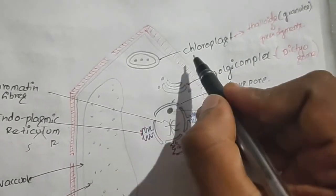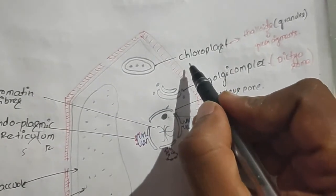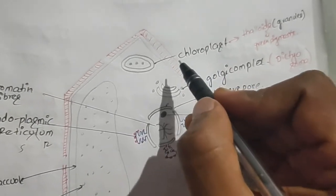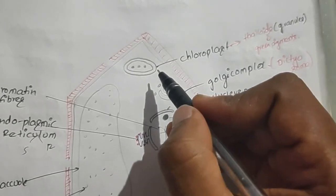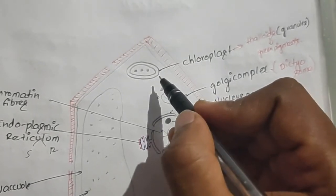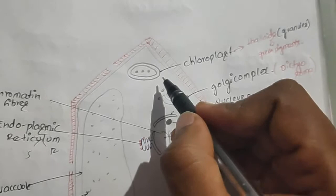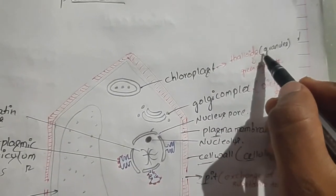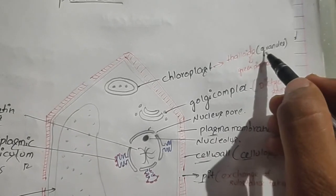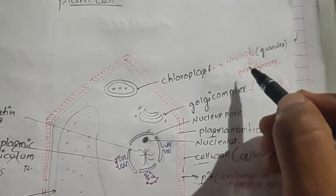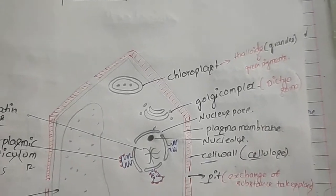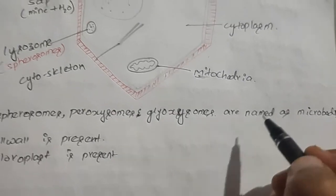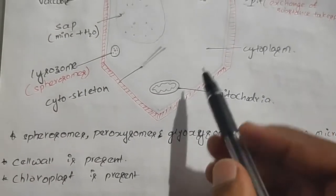The plant cell contains chloroplast, and its presence is the unique character of the plant cell. The chloroplast has a double membrane structure, and both outer and inner membranes are smooth. Inside the chloroplast are stacks of thylakoids known as grana. Inside these grana are green pigments that help in photosynthesis. Sphaerosomes, peroxisomes, and glyoxysomes are named as microbodies, and these are also present in small quantities in plant cells.